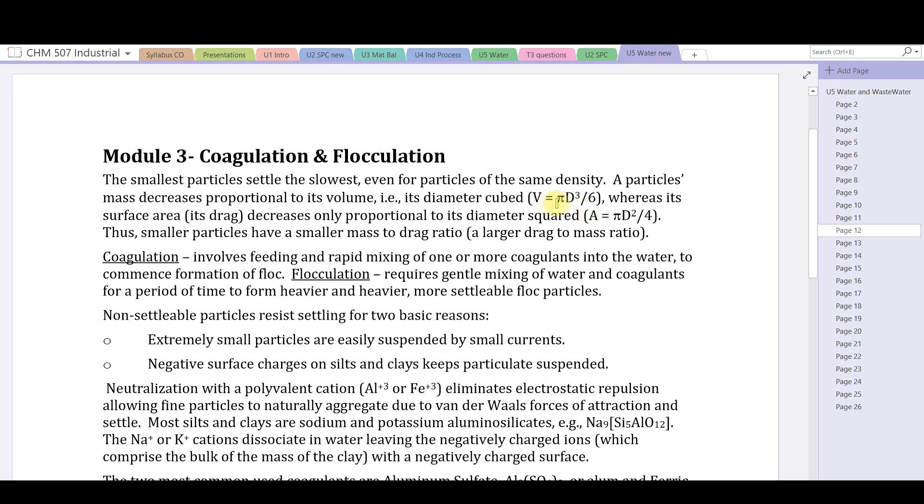If the area decreases by a factor of four, then its drag force will decrease but not as much as its mass has decreased. A smaller particle will have a smaller mass-to-drag ratio, or a larger drag-to-mass ratio, because as we shrink the size, the mass decreases much more quickly than the surface area.